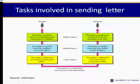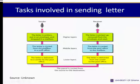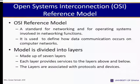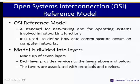The tasks involved in sending a letter illustrate layering: we have a sender and a receiver, but the letter goes through different levels of layers. There is a lower layer where the letter is delivered, a higher layer where it is written, and a middle layer where it is controlled. The OSI reference model is a standard for networking that defines how data communication occurs in computer networks. It is divided into seven layers, each providing service to the layer above and below it, and each associated with protocols and devices.